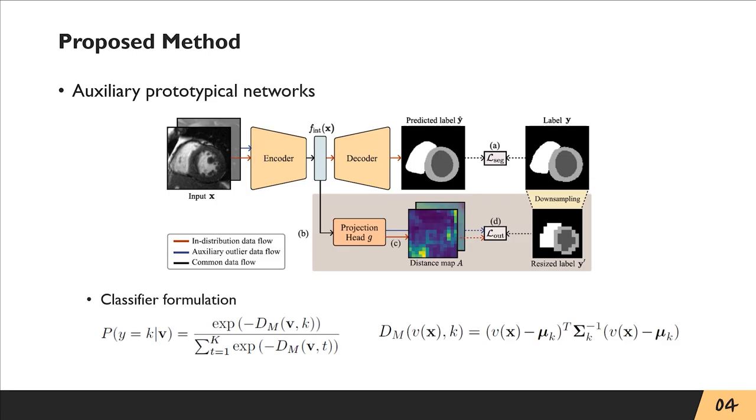Specifically, we apply a prototypical head to the intermediate layer of FCN, or encoder output, and formulate a distance-based classifier where we use the Mahalanobis distance measure.